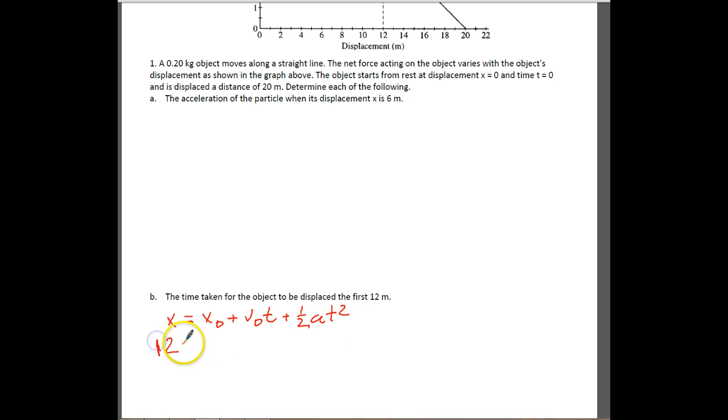Let's plug everything in. We have 12 meters is our final position, original position is 0, original velocity is 0, and so we're just going to add to that one half of the acceleration we got in the last part, which was 20, times the time squared.